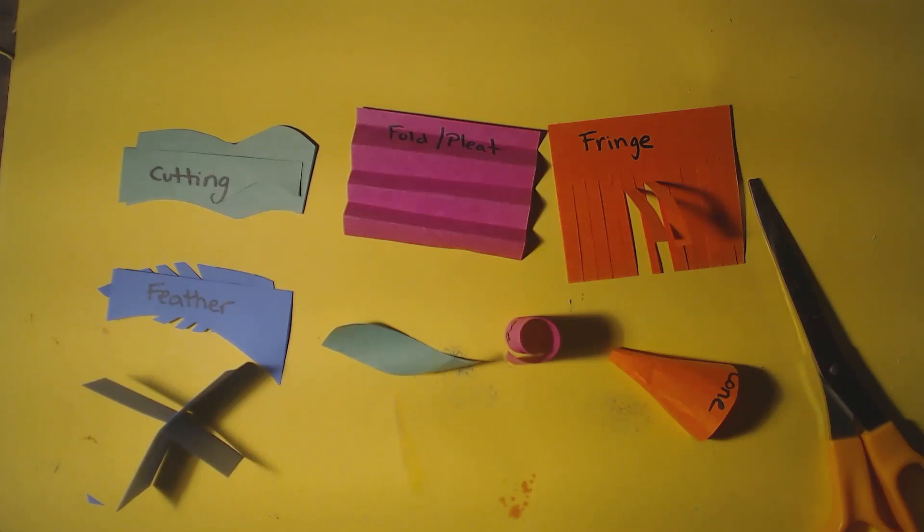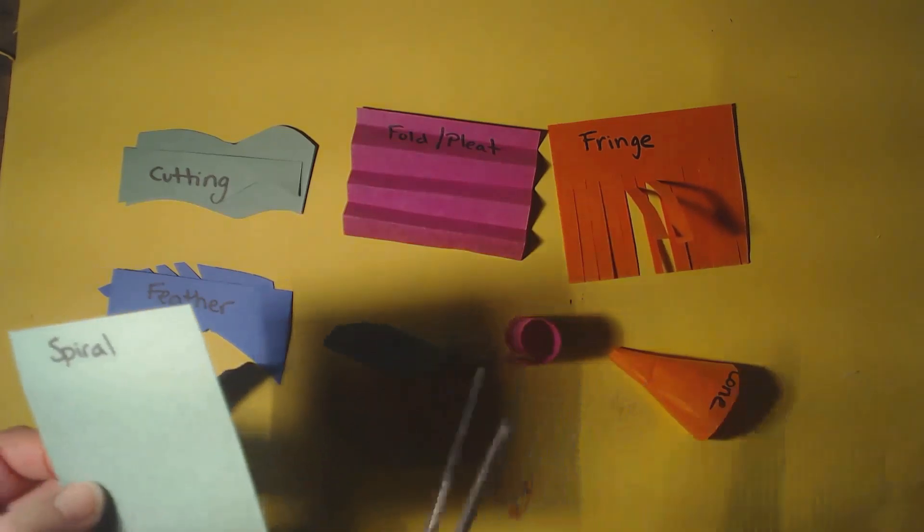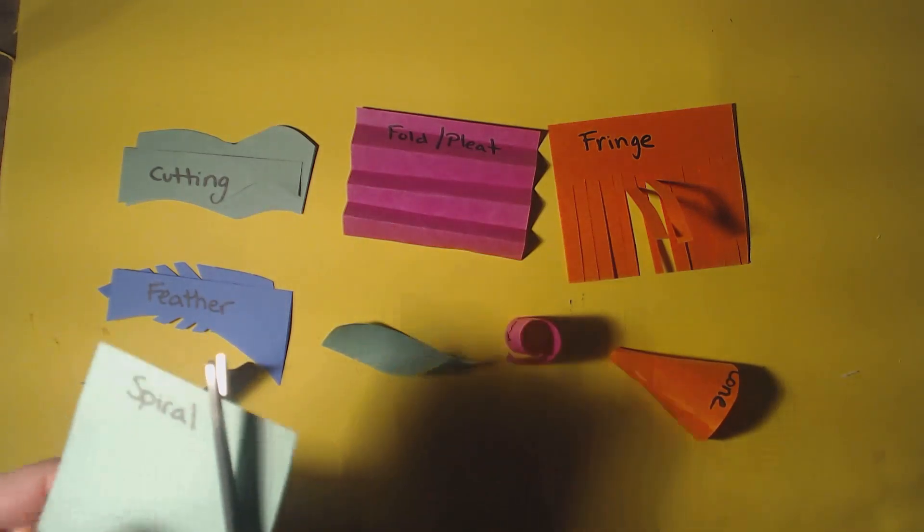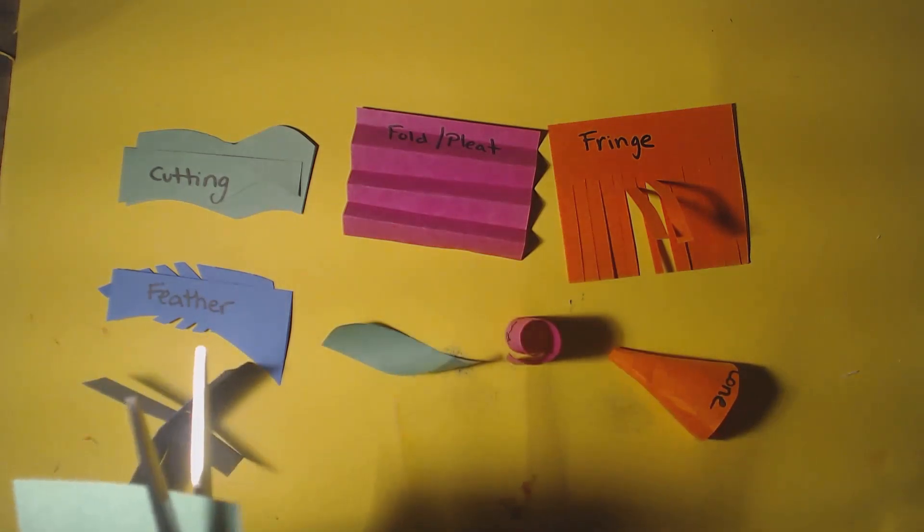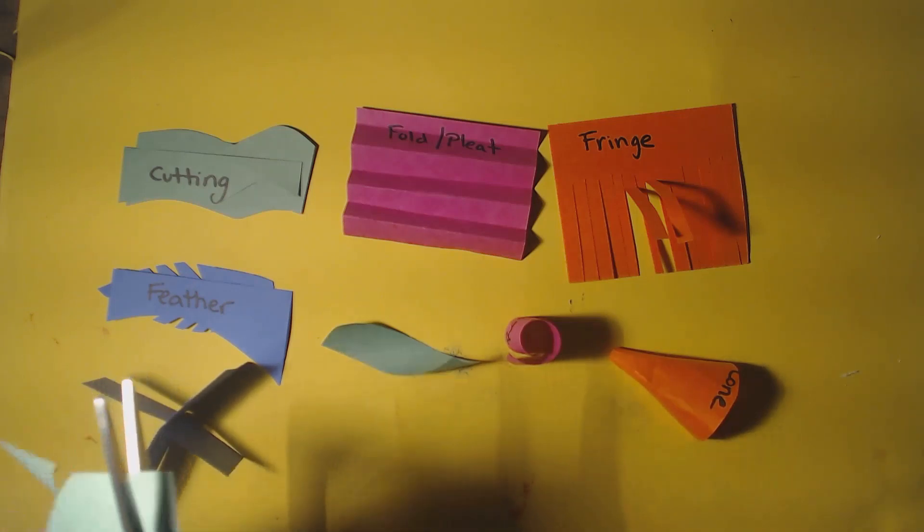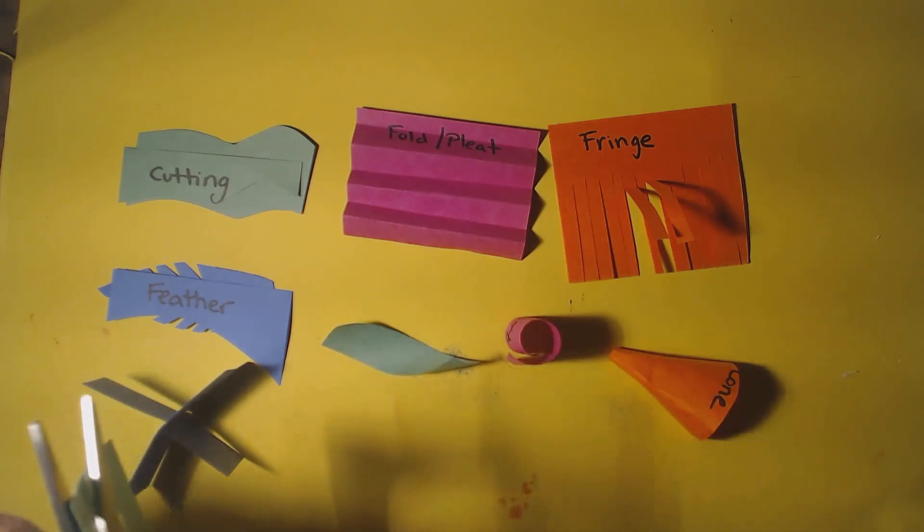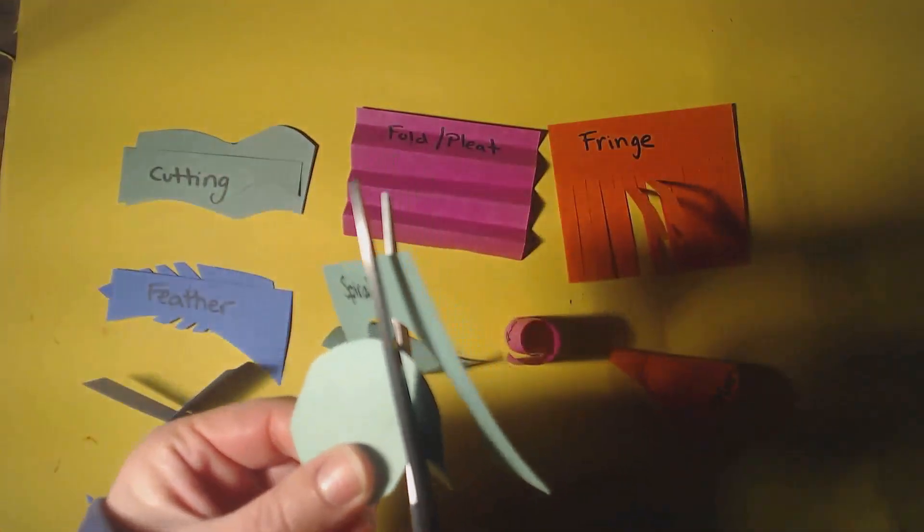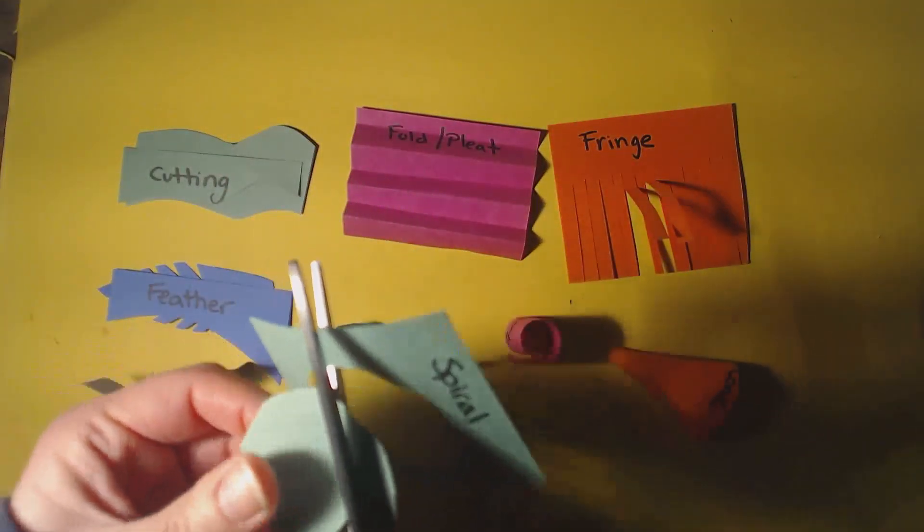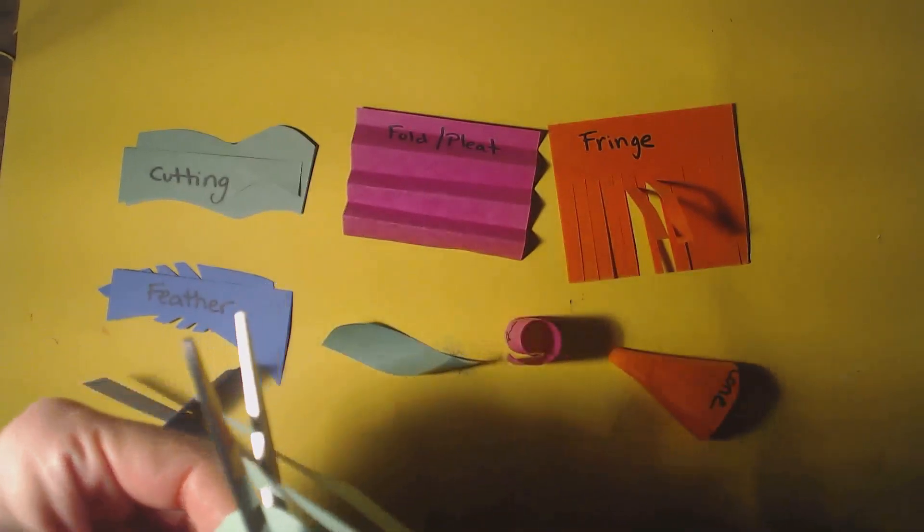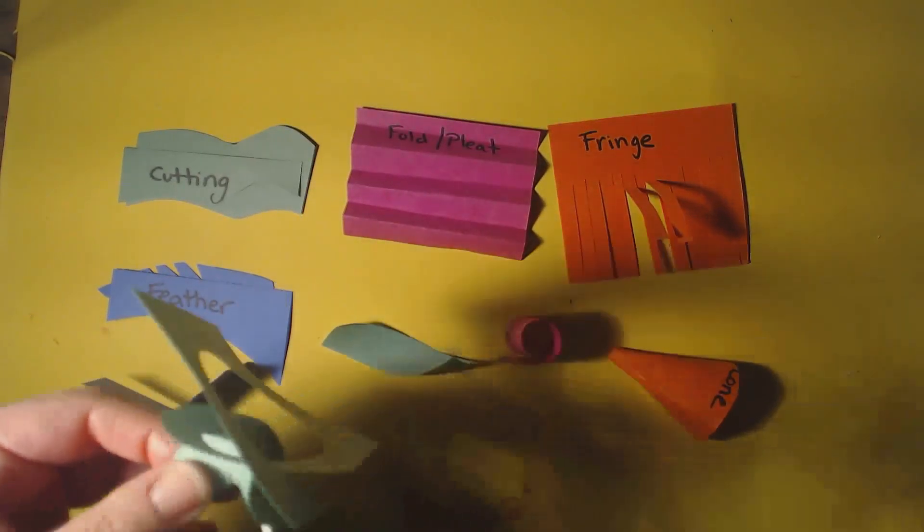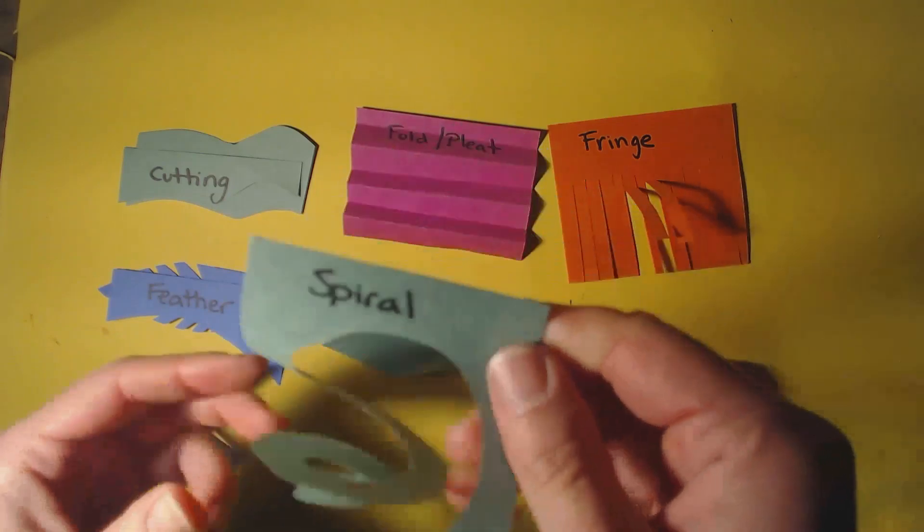Okay, then we have the spiral. So I have a square here, but some people start with a circle. And that is when you start cutting. And you keep going in a circle, but each time you go, you get a little bit smaller and smaller. You might help to draw the line first. You can go in all the way to the middle. So this is the spiral.